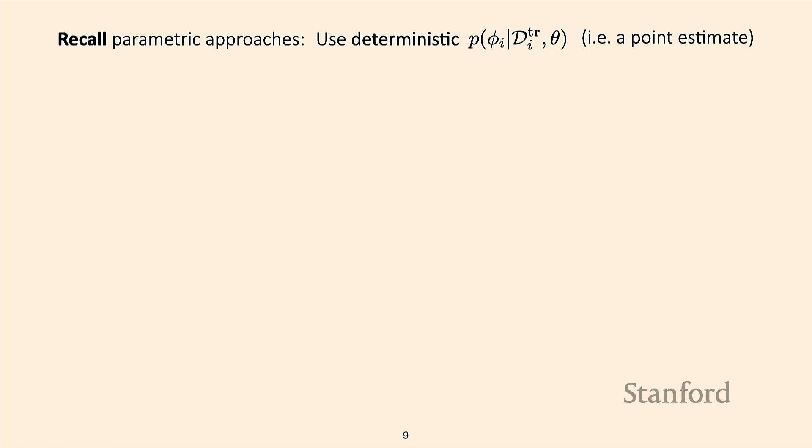Jumping into Bayesian meta-learning algorithms: all the algorithms we've seen so far give us our task-specific parameters in a fully deterministic way. They give us a degenerate distribution over phi_i — just one parameter vector, not a distribution with any support. There are cases where we actually want to generate multiple hypotheses.